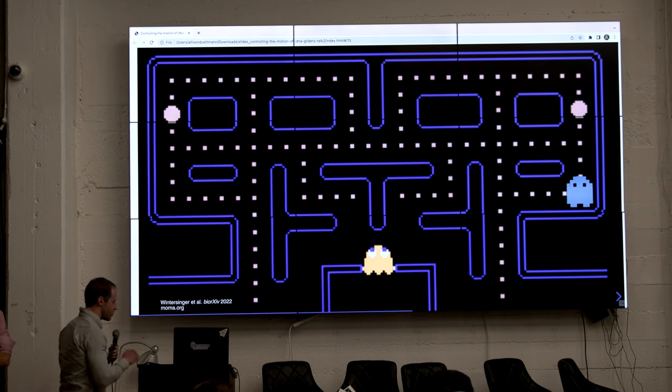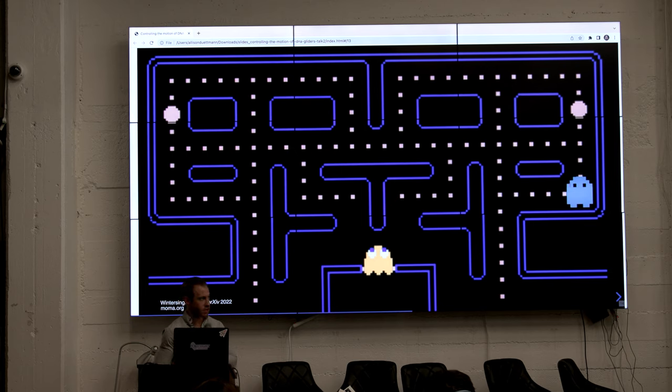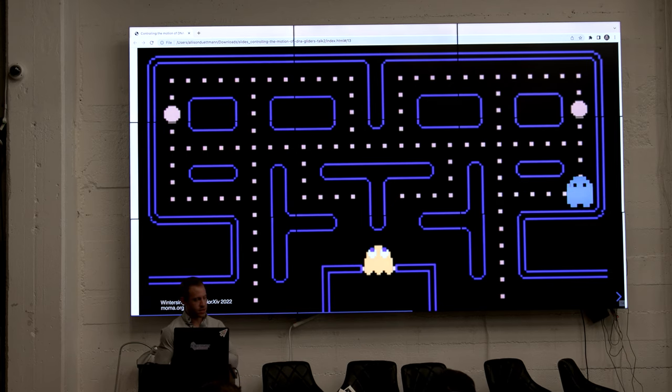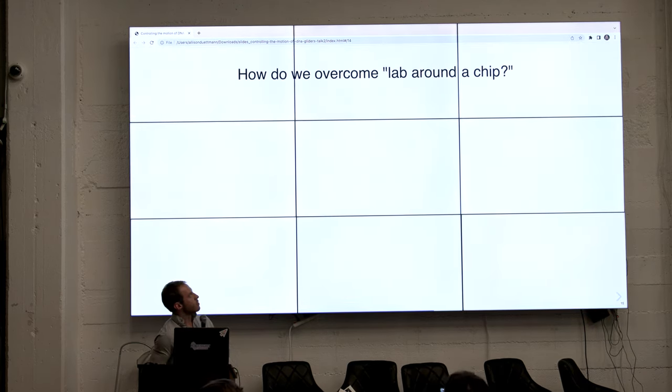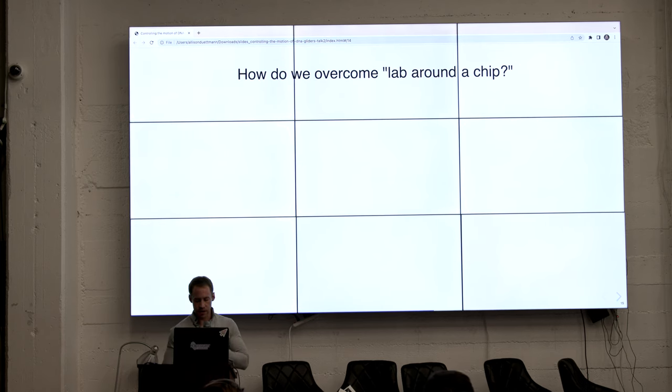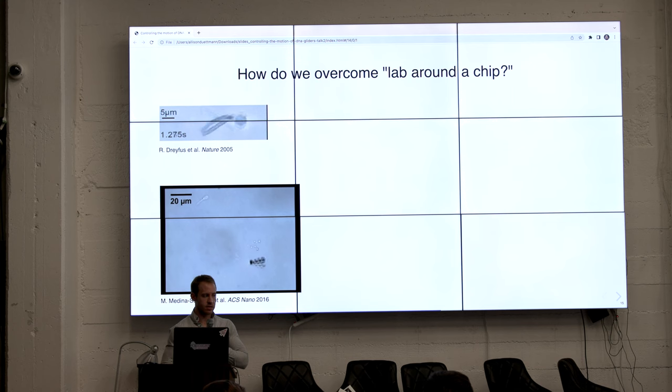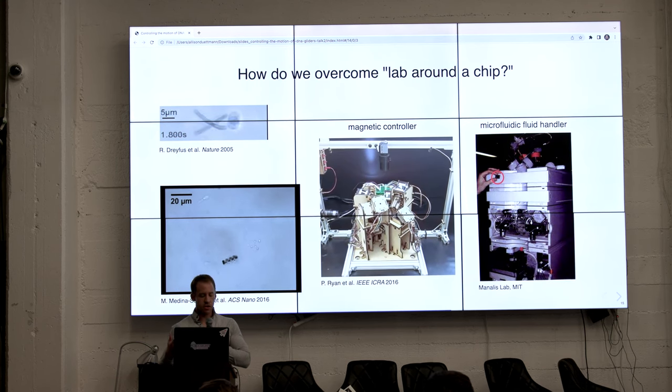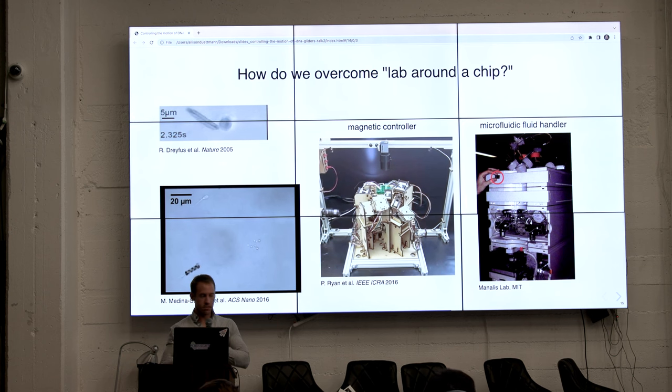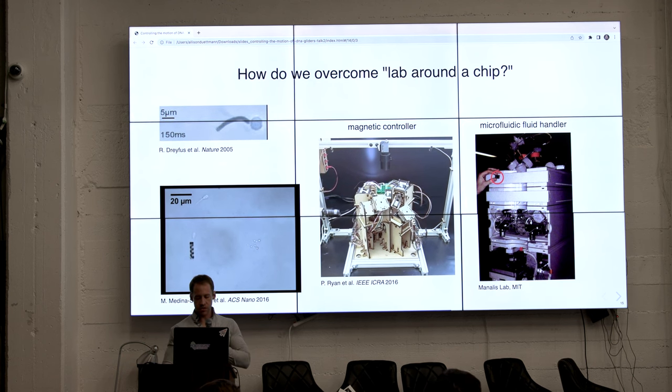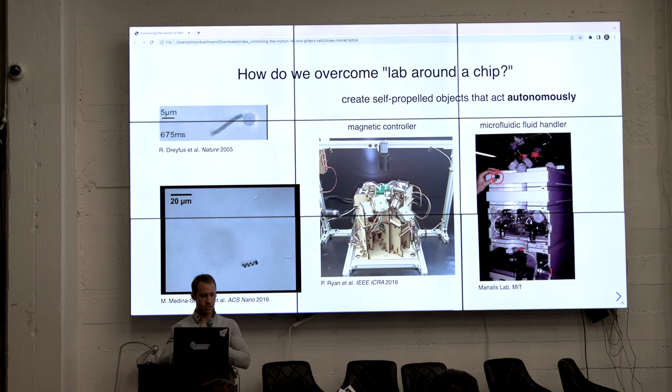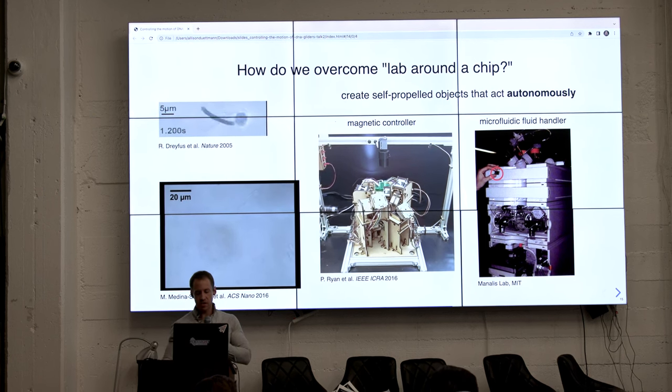Yeah, so we're going to be thinking about this glider system. And one thing I'll just cover quickly is why we're interested in that sort of autonomy. So there's many systems where you can use magnetic fields or microfluidics to really precisely control objects on this micrometer length scale. But indeed, you have these really large controllers that are required to manipulate them. And so a solution is to create an autonomous system where you get rid of these controllers.